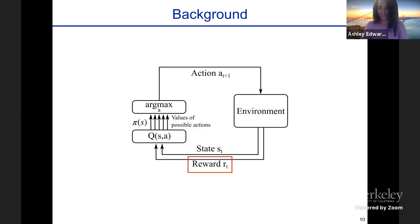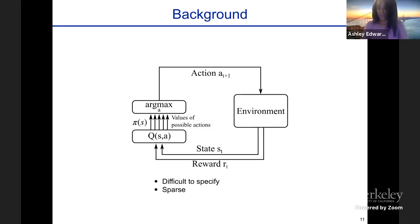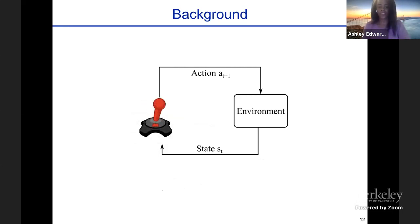A lot of the magic behind reinforcement learning comes from the reward signal — if you can come up with a good reward function, RL agents can often solve really interesting problems. But some reward signals can be very difficult to specify. Humans often don't know how to specify reward functions, and even if you come up with something reasonable, the agent can learn to exploit it. Another problem is that reward signals are often sparse, so the agent might take a very long time to figure out how to solve the task, or it might never be able to figure it out on its own.